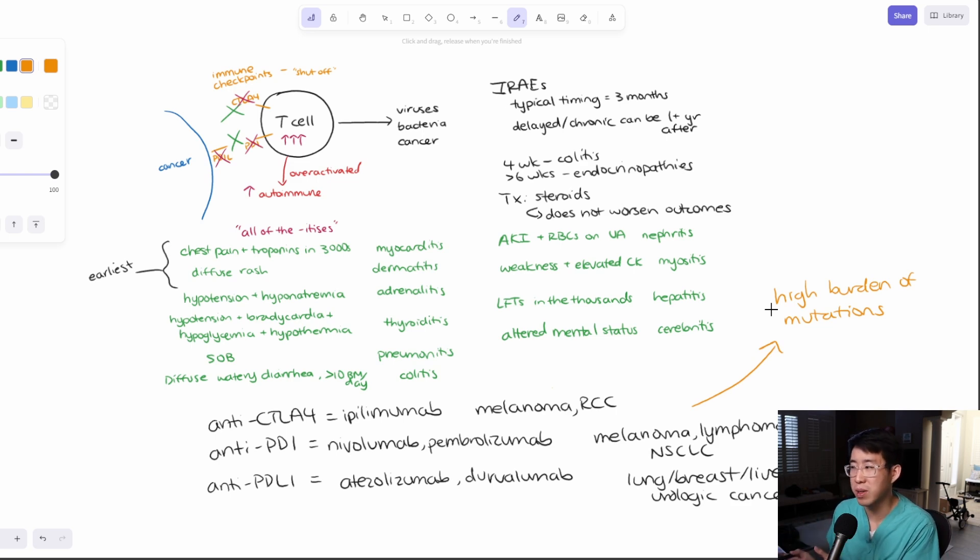And the reason is because it's thought that as you accumulate so many mutations, there are more antigens for your immune system to potentially recognize as foreign. And so it's more likely that when you turn the immune system back on, it is going to recognize those foreign antigens and those mutations and be able to kill off the cancer. So high burden of mutations means it is more responsive to immunotherapy.